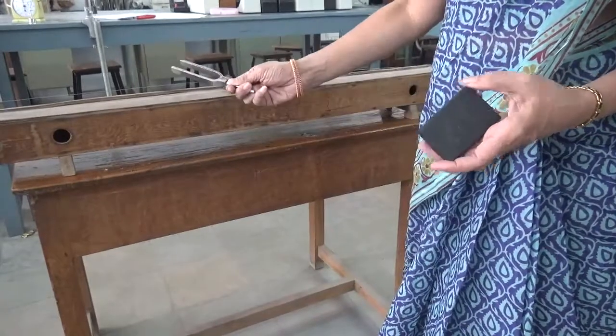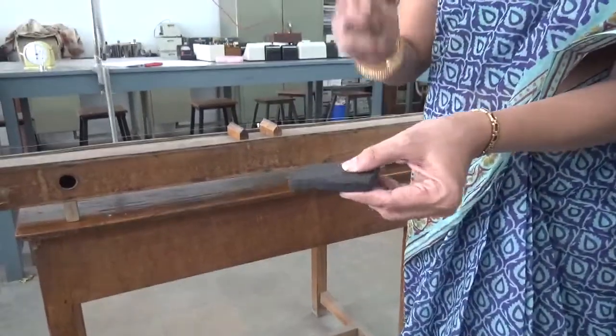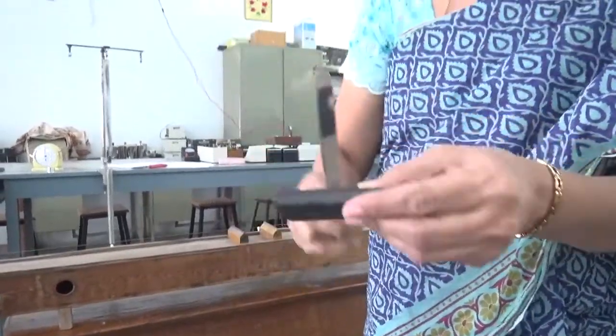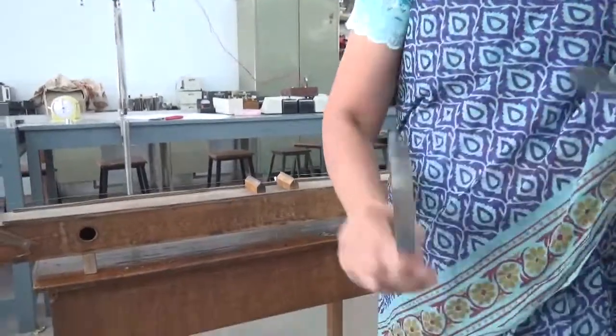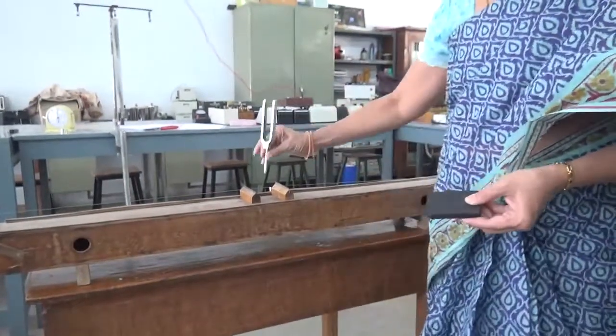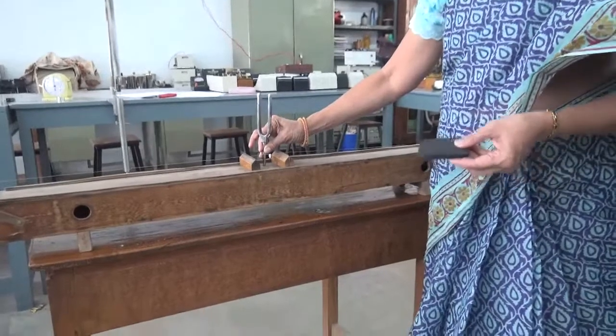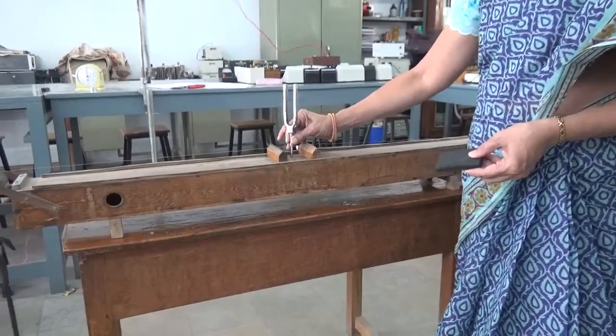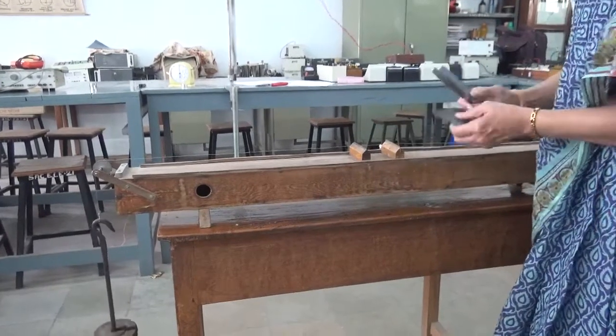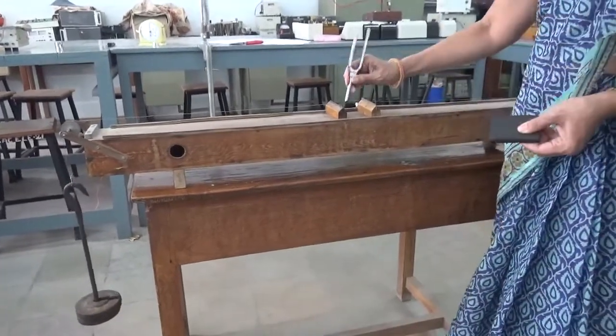It's basically a wooden box. These are the two prongs of the tuning fork. If you strike this, you can see it is vibrating. Strike it and keep it here. You can hear the sound.